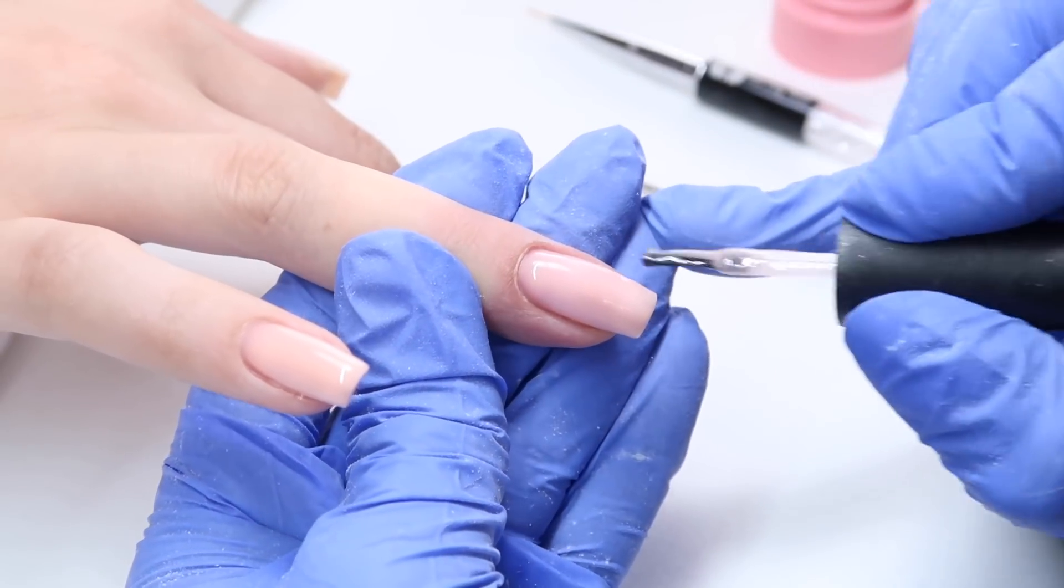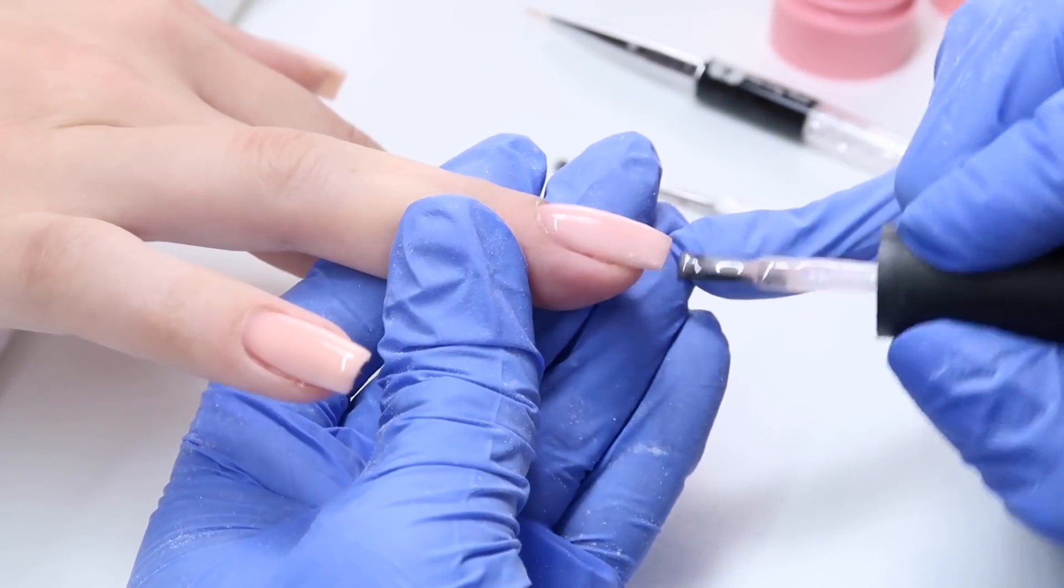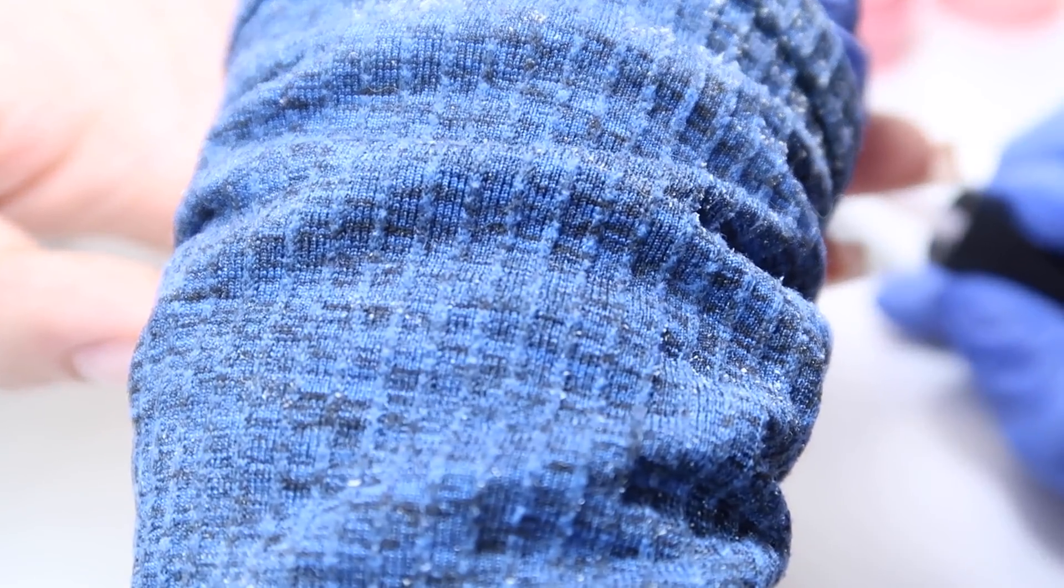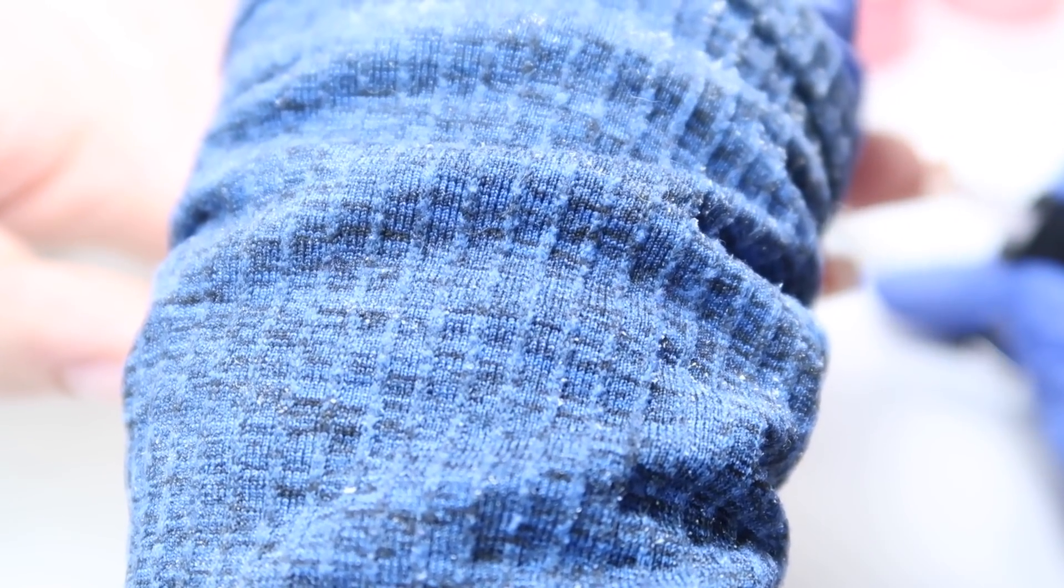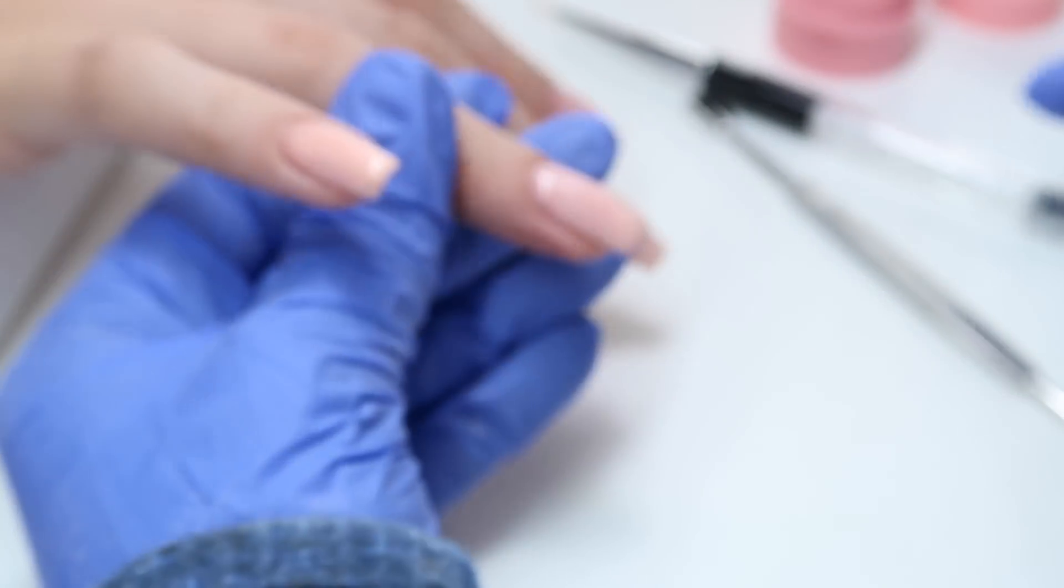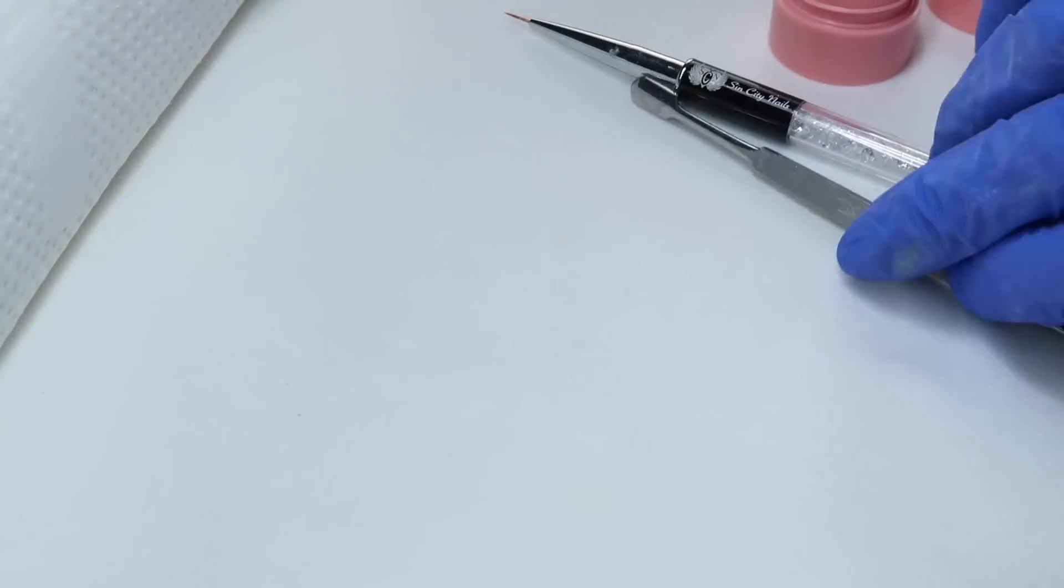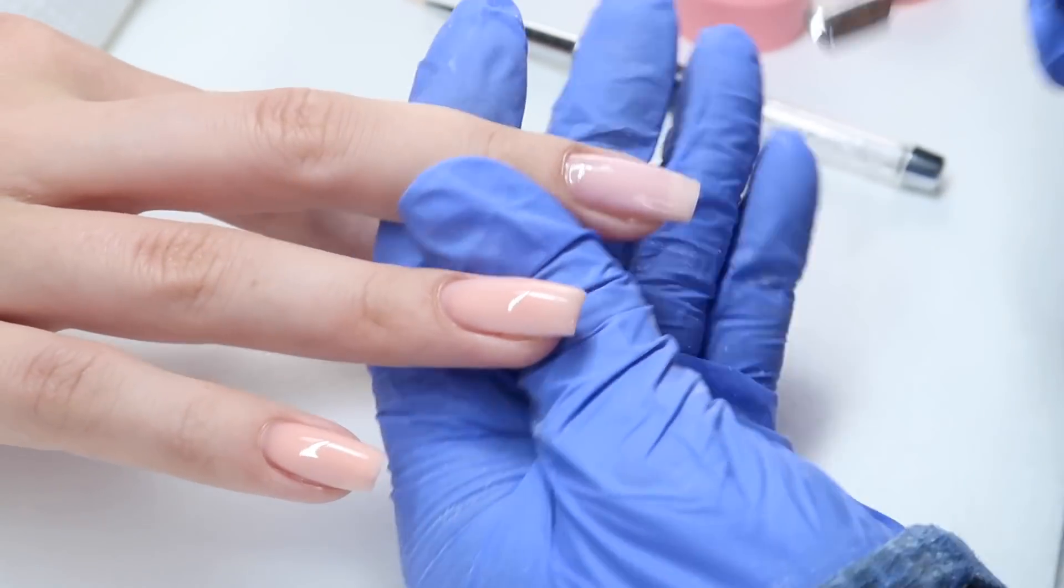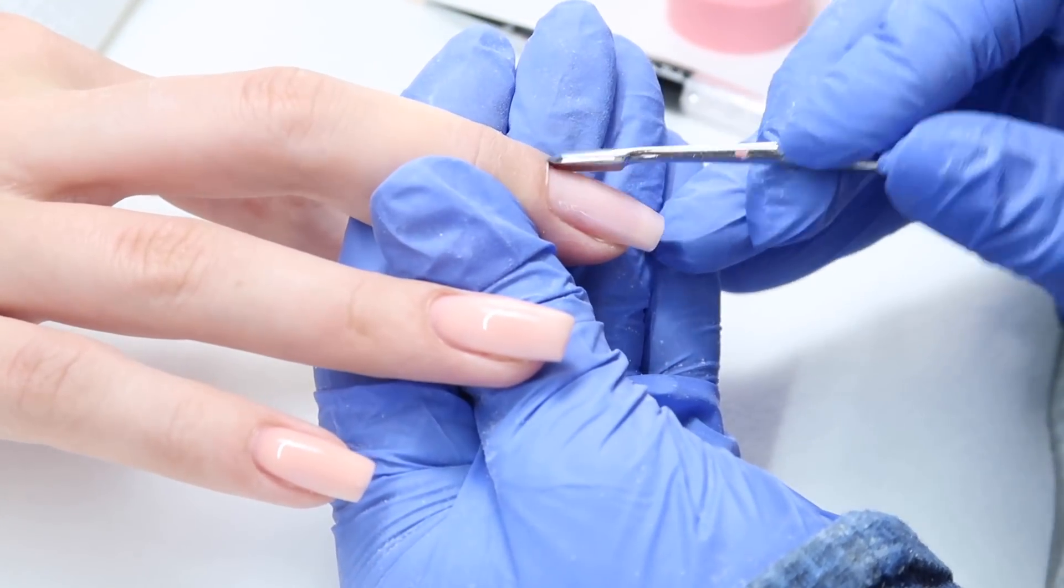After you get all the product on the nail, I have my client flip their hand upside down and that way I can really see the product, where it's going, and have it kind of melt where it needs to go so that you don't have any spillage into the cuticle area. That's why I'll flip the hand upside down - gravity will pull it right into the center where it needs to be.